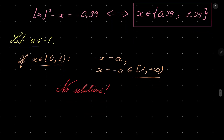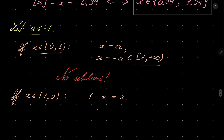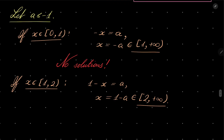One more case: if x is between 1 and 2, then floor of x is 1, so we have 1 minus x equals a, meaning x equals 1 minus a. Since minus a is greater than or equal to 1, this number is in the interval from 2 to infinity, which cannot be between 1 and 2 — no solutions.